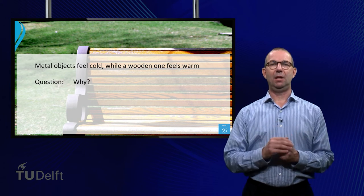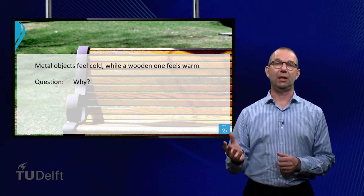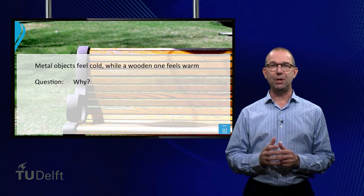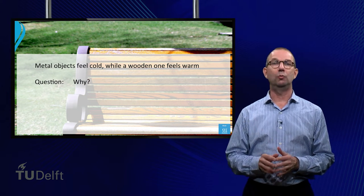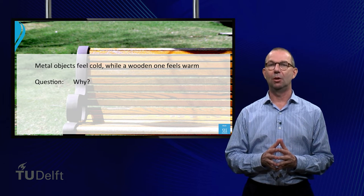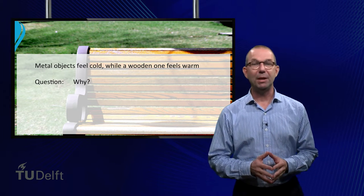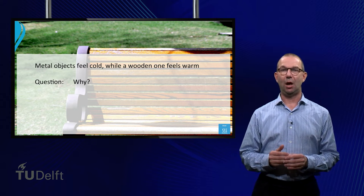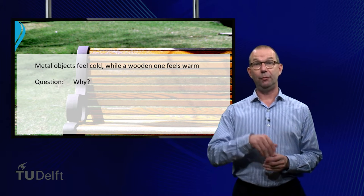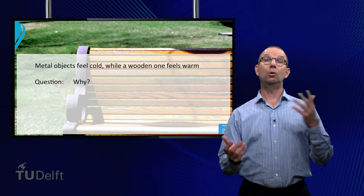Why are we so bad at measuring the temperature of an object? Sure, if the objects are very hot we will know, regardless if they are made of metal or wood. But isn't it strange that two objects that are of the same temperature can feel warm or cold?